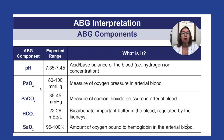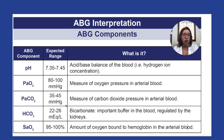Then we have PaO2, which is the partial pressure of oxygen in the arterial blood. That should be somewhere between 80 and 100 mmHg. Then we have the partial pressure of carbon dioxide in the arterial blood, which is PaCO2. We would expect a value for PaCO2 somewhere within the range of 35 to 45 mmHg. Then we have bicarb, which is HCO3. Bicarbonate is an important buffer in the blood and is regulated by the kidneys, with an expected value somewhere in the range of 22 to 26.